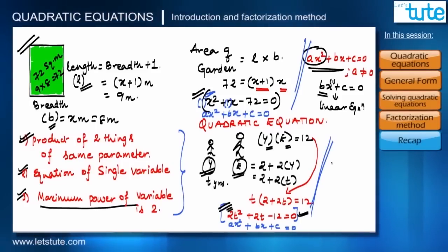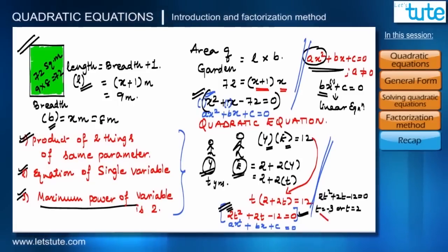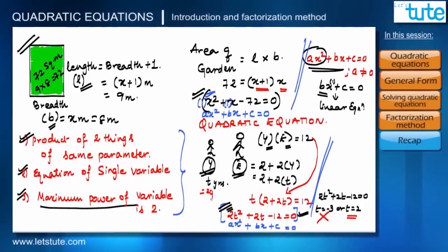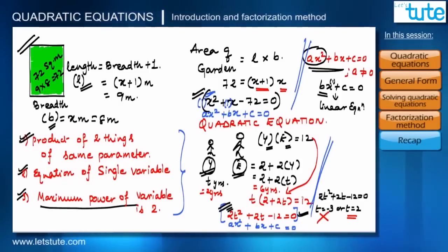Similarly, solving the brothers' equation gives t = −3 or t = 2. Since age cannot be negative, we take t = 2. Therefore the younger brother's age is 2 years and the elder brother's age is 2 + 2×2 = 6 years.